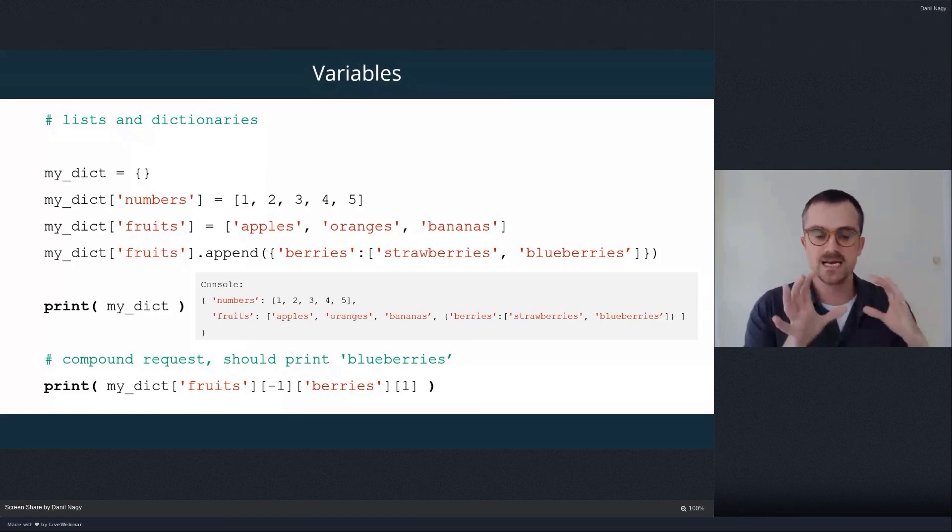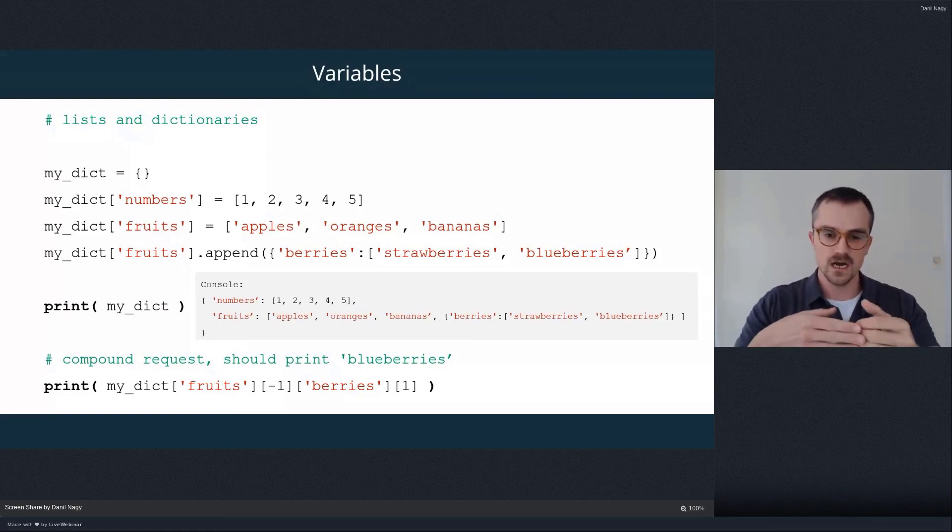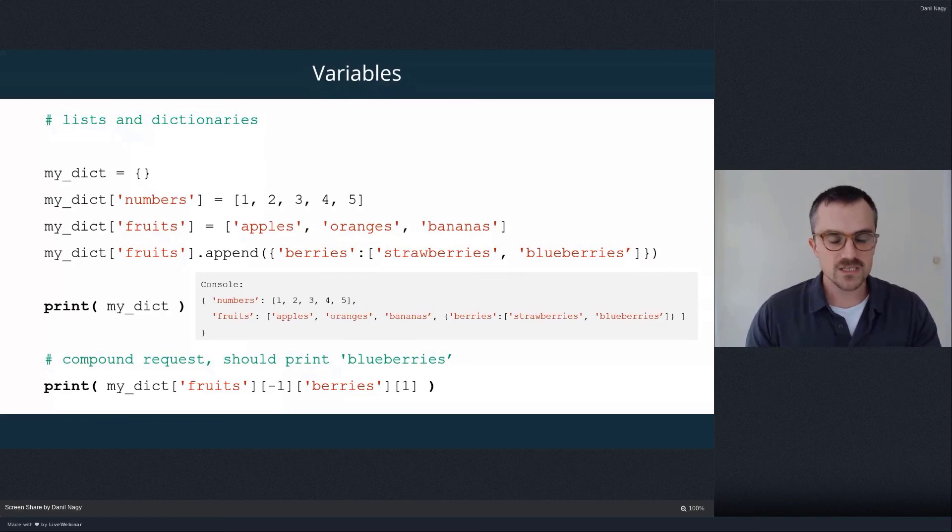And the last item in that list is actually another dictionary with one key and another list with two elements. And to get items from this compound data set, we actually do the same thing that we would for any list or dictionary. And we can actually combine these requests, starting from the top of the hierarchy, drilling down further and further into our data set.